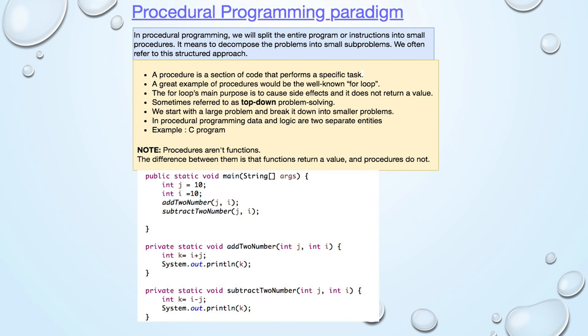Procedural programming. In procedural programming, we divide the problem into smaller sub-problems. We often refer to this as a structured approach. A procedure is a chunk of code that performs a specified task. Data and logic are separate entities in procedural programming. Here we have two procedures: add two numbers and subtract two numbers. The main procedure will call these sub-procedures to add and subtract numbers.